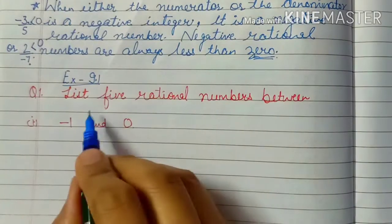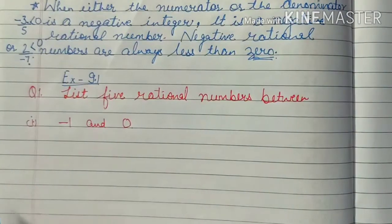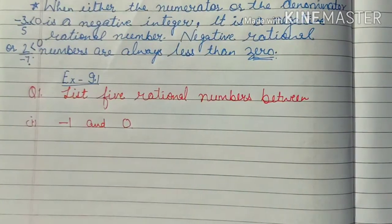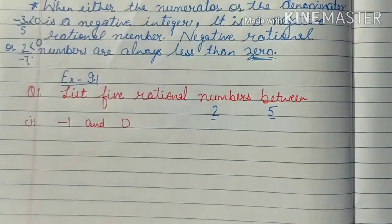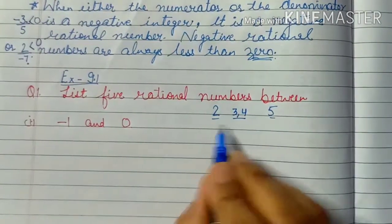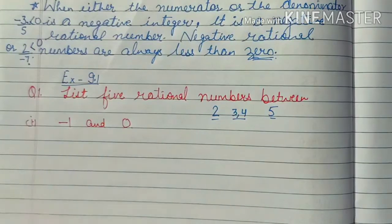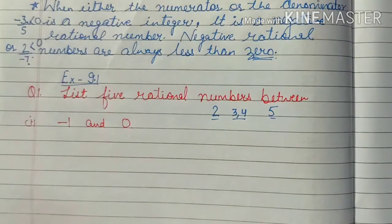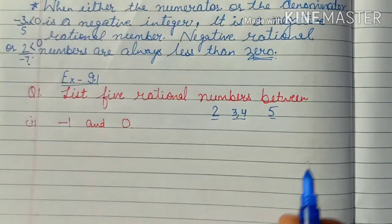The first question asks us to list 5 rational numbers between minus 1 and 0. If we want to write integers between minus 1 and 0, there are none. For comparison, the integers between 2 and 5 are 3 and 4. But between minus 1 and 0 there is no integer. However, if we want to write rational numbers, we can write uncountable rational numbers between any two integers or between any two rational numbers.